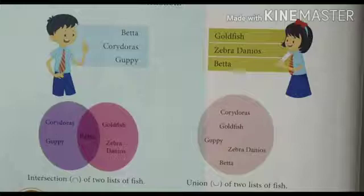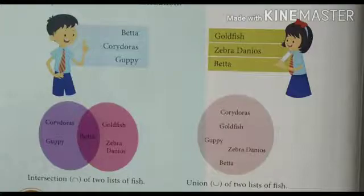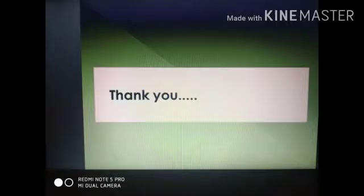In the second, creamish circle, you can see all five fishes are written except Beta is not listed twice, because it is common in both the lists of boys and girls. So it is the union of two lists. Hope you all understood this. Thank you for watching this video.